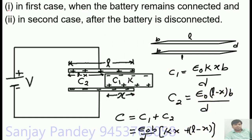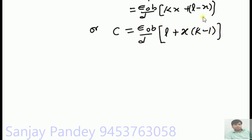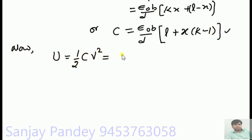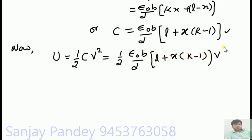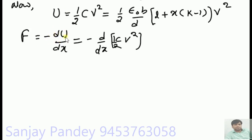Since K > 1, C takes the form above. The potential energy of the system is U = ½CV². Substituting the expression for C, U = ½ · (ε₀B/d) · [L + X(K−1)] · V². The force on the dielectric slab is F = −dU/dX = −d/dX (½CV²). Since V is constant (battery connected), this becomes F = −½V² · dC/dX.